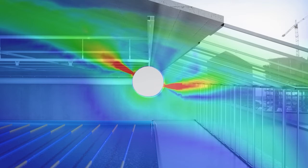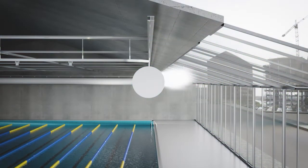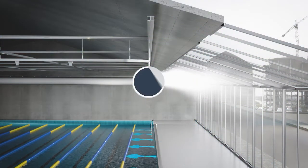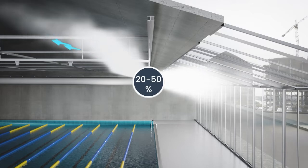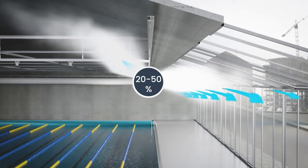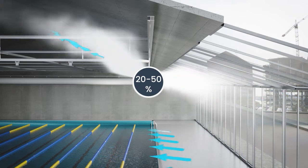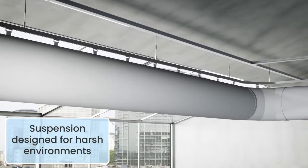Fabric Air engineers air distribution solutions for pools that can provide precise air velocities to the structure, pool surface, and spectators from a single duct. Fabric Air is able to alter both volume and throw in any direction using linear dispersion, allowing designers to prevent condensation.